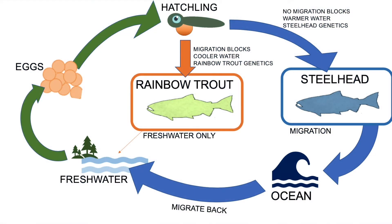Here we have the life history cycle of Oncorhynchus mykiss, and you can see that the hatchling has two choices: steelhead or rainbow trout. Let's start at the egg phase and work our way around the cycle to learn more.